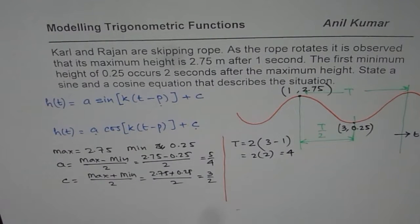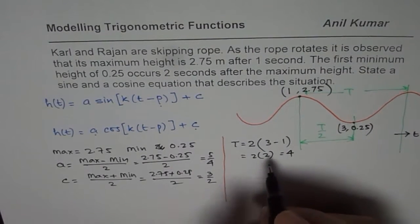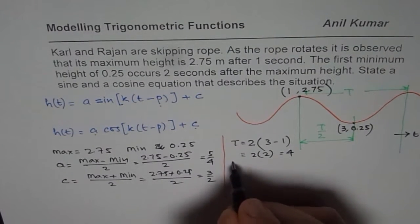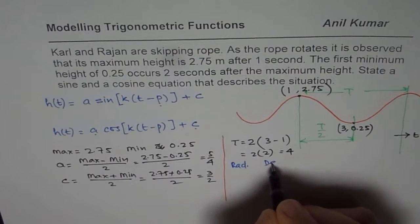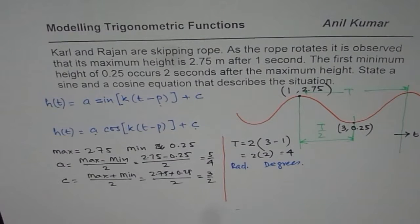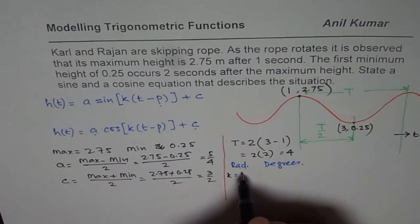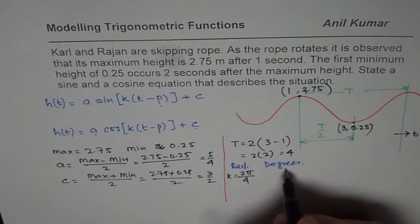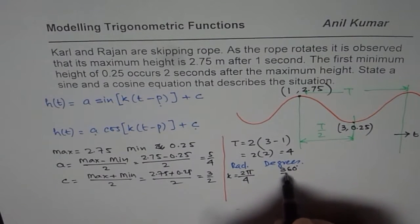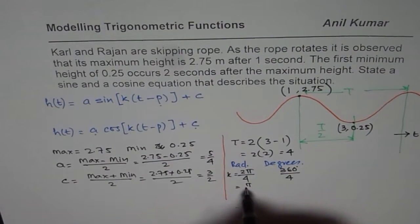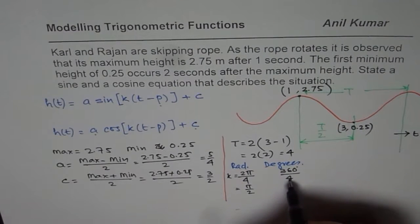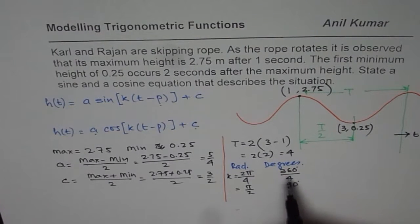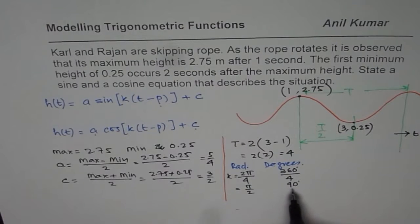We get time period of 4. Now, if you are working in radians, let me write it down for both radians and degrees. The K value in radians will be 2π by the time period, which is 4. As far as the degrees is concerned, it will be 360 degrees divided by 4. That is π by 2 as K value here, and 90 degrees for 360 degrees divided by 4.